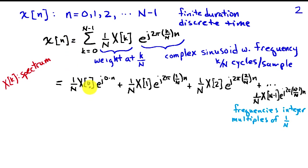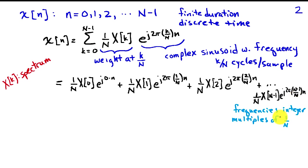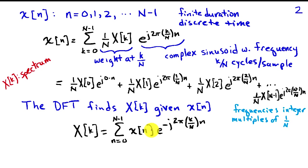Expanding the sum, we have 1 over N times capital X of 0 times e to the j0 times n, which is just 1 — the zero frequency term. When k equals 1, we have a complex sinusoid of frequency 1 over N cycles per sample. When k equals 2, we have frequency 2 over N cycles per sample, and so on up to N minus 1 divided by N. These frequencies are harmonics — integer multiples of 1 over N cycles per sample. We can find the coefficients X of k from the time series x of n using the discrete Fourier transform formula.